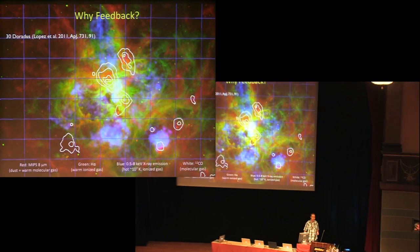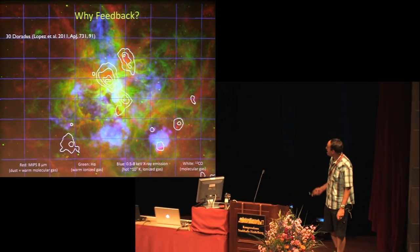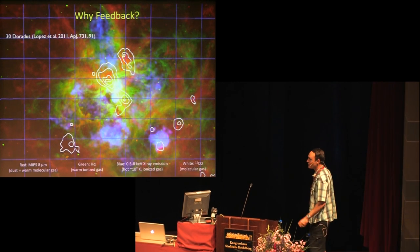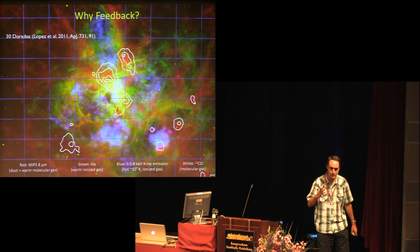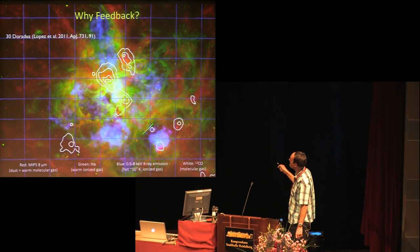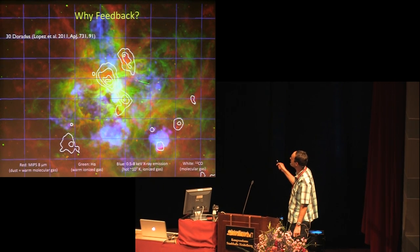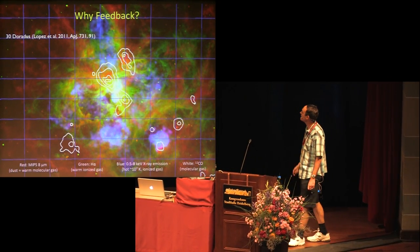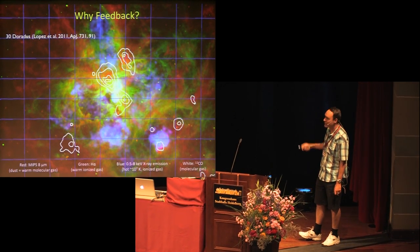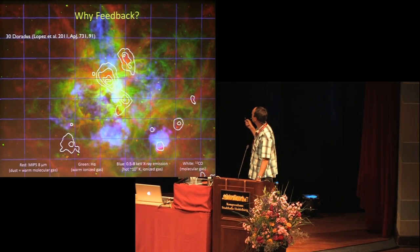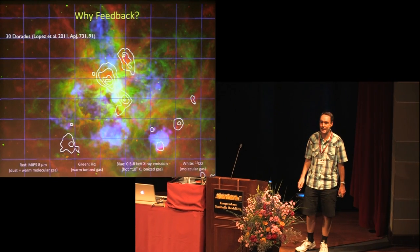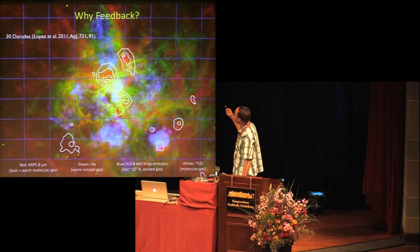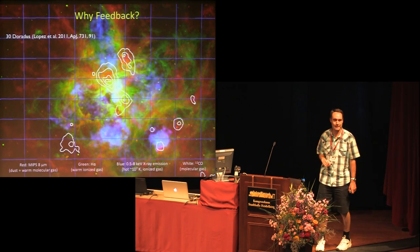My first slide I probably don't have to cover anymore because of John Bally's wonderful talk from yesterday — it's basically to convince you that we should be interested in feedback. This is an image of 30 Doradus, a multi-colour image. The red shows warm dust, green is H-alpha emission from warm ionised gas, blue is X-ray emission from very hot ~10^7 Kelvin gas, and white shows the remaining dense molecular gas — presumably left over from what formed this region.